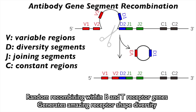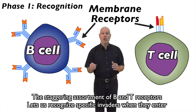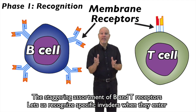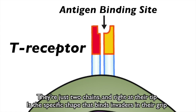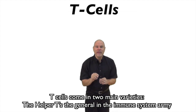Random recombining within B and T receptor genes generates amazing receptor-shape diversity. The staggering assortment of B and T receptors lets us recognize specific invaders when they enter. T receptors are quite different, but their function is the same — they combine with almost any antigen that can be named. They're just two chains, and at the tip is the specific shape that binds invaders in their grip.